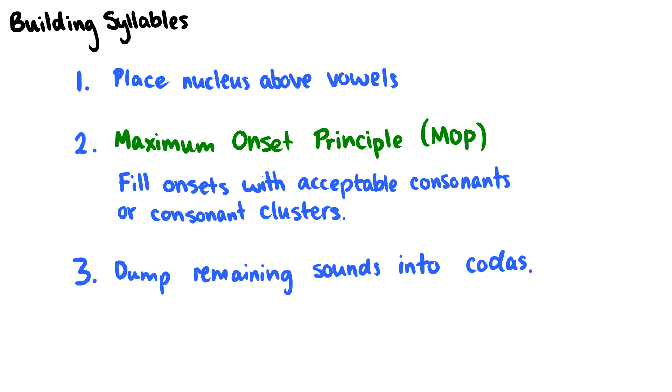So there's three steps to building syllables. The first step is to place the nuclei above vowels, so every vowel gets a nucleus, which means every vowel is going to be part of its own syllable. The second is to adhere to what's called the maximum onset principle, and that is to fill your onsets up as much as possible with acceptable consonants or consonant clusters.